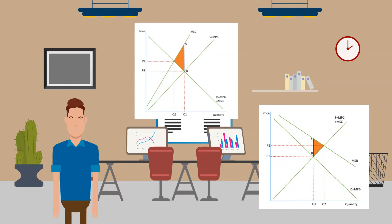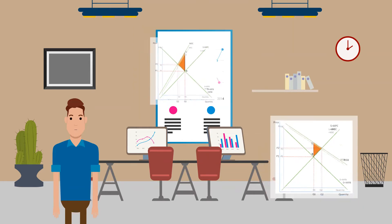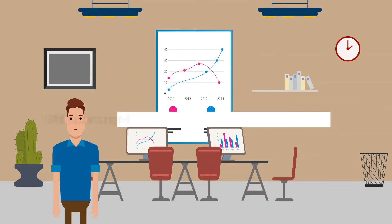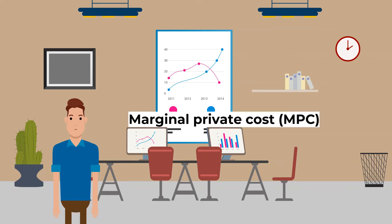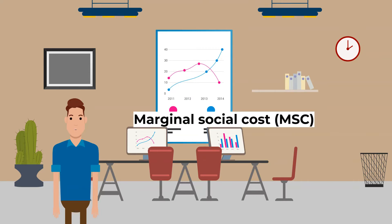The externalities diagram looks at marginal costs and benefits. A marginal cost and benefit is the extra cost or benefit of producing and consuming one extra unit of the good. For example, the marginal private benefit (MPB) is the extra satisfaction gained by the individual from consuming one more of a good, and the marginal social benefit (MSB) is the extra gain to society from the consumption of one more good. The marginal private cost (MPC) is the extra cost to the individual from producing one more of the good, and the marginal social cost (MSC) is the extra cost to society from the production of one more good.